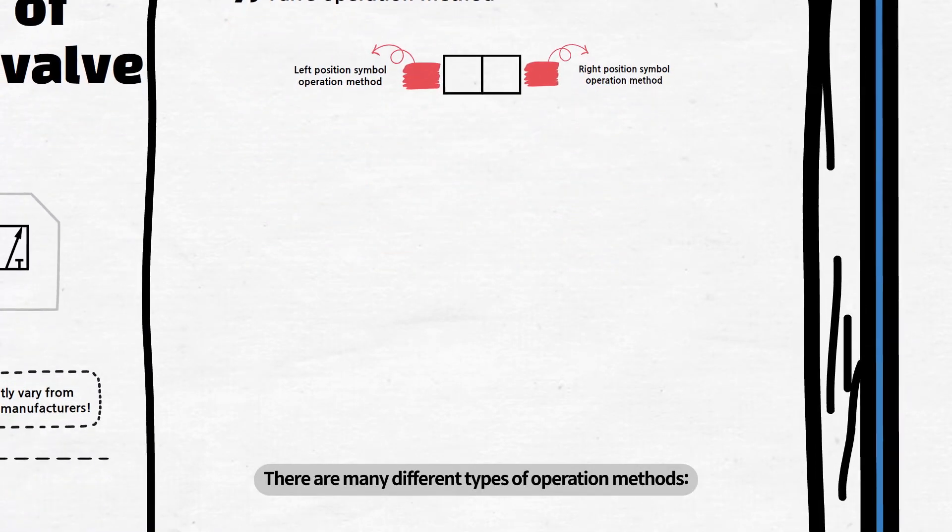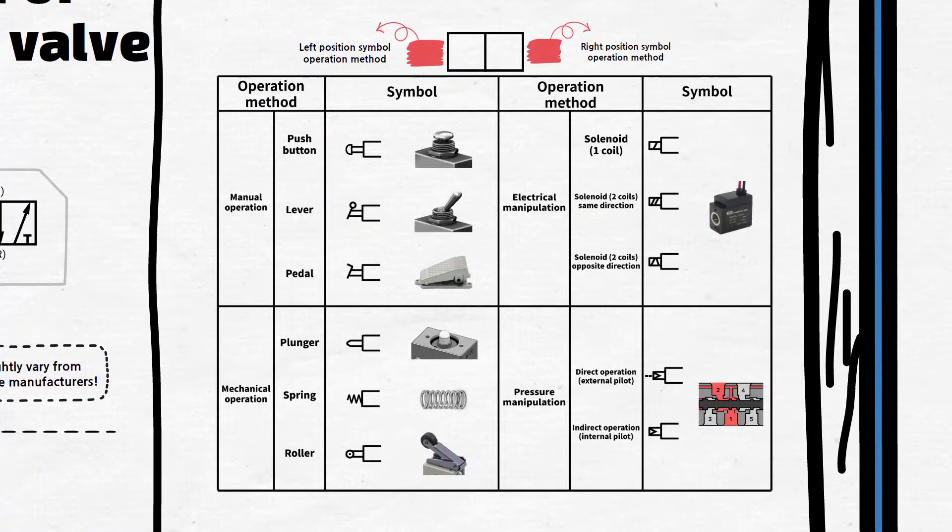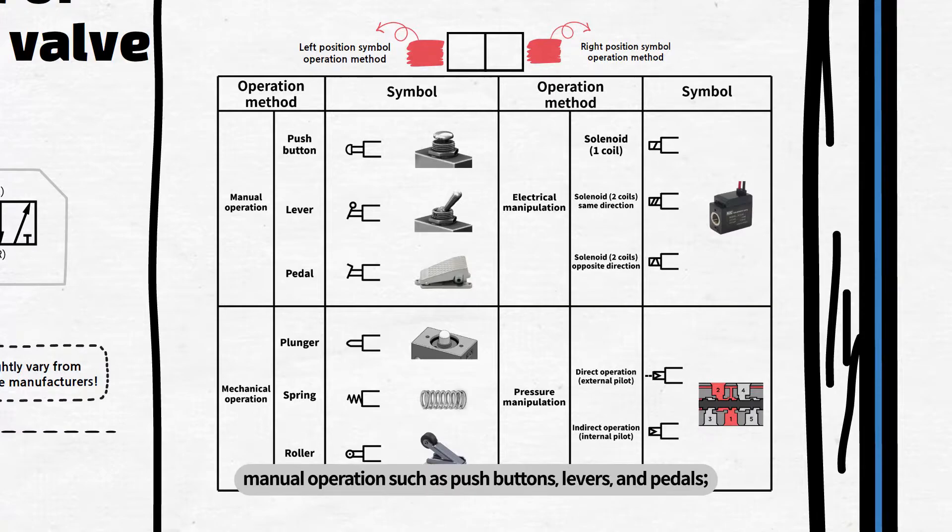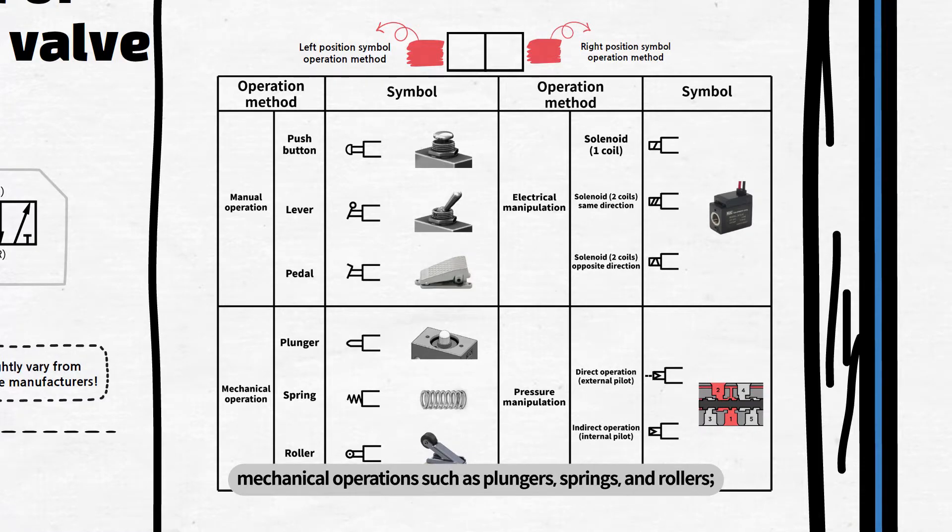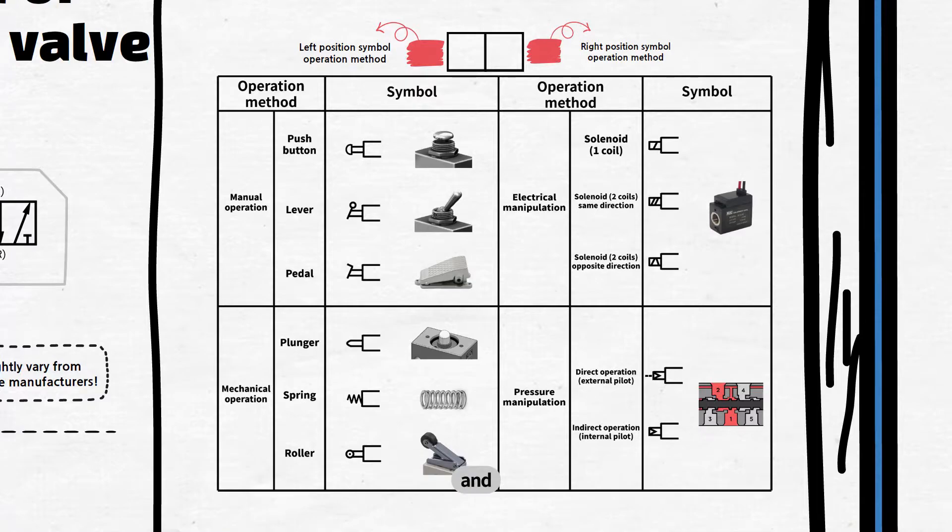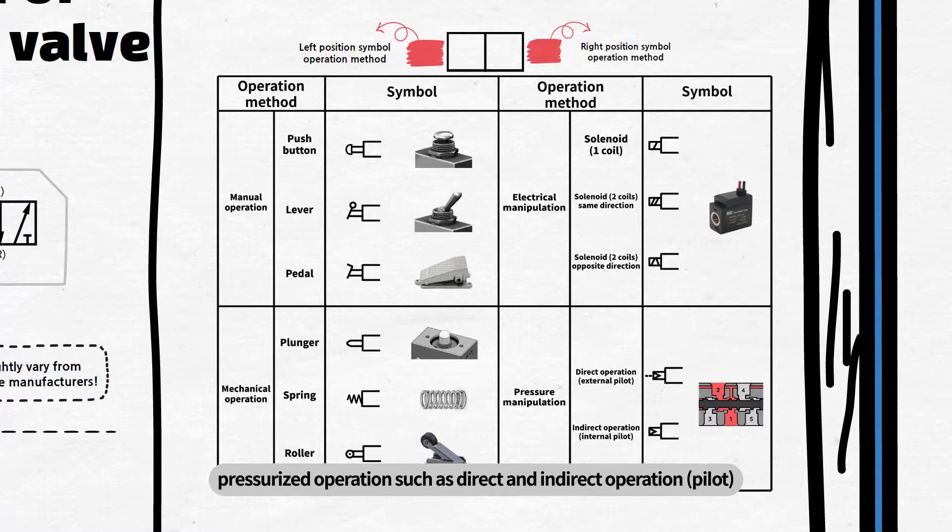There are many different types of operation methods. Manual operation such as push buttons, levers, and pedals. Electrical operations such as solenoids, mechanical operations such as plungers, springs, and rollers. And pressurized operation such as direct and indirect operation pilot.